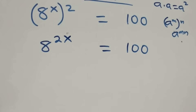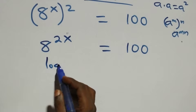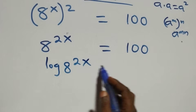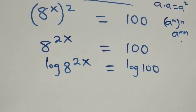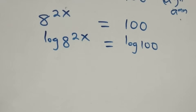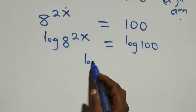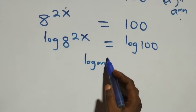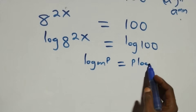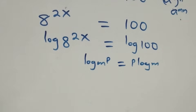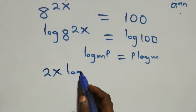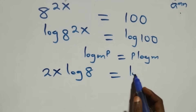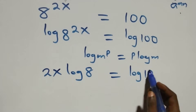The next step: we take the log on both sides, giving us log of 8 raised to power 2x equals log 100. We apply the power rule of logarithms: log of m raised to power p is the same as p times log m. So what we have becomes 2x times log 8 equals log 100.